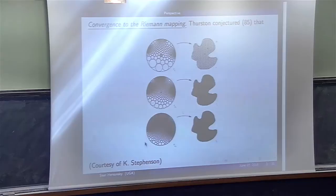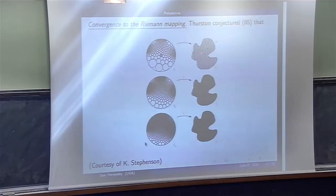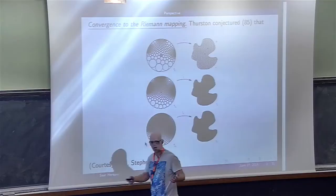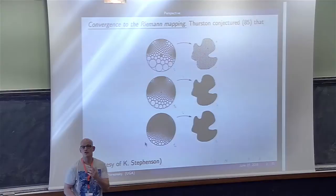Here is what we are doing. Think about the image on the right-hand side, and let's call it omega. That's a simply connected open domain in the plane. Think about your favorite cookies, and what you do is pack this domain with cookies in a way that some combinatorics is preserved.